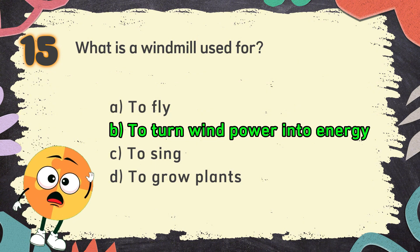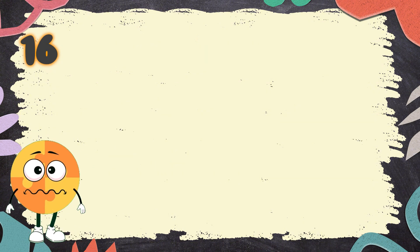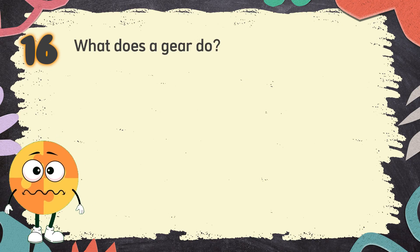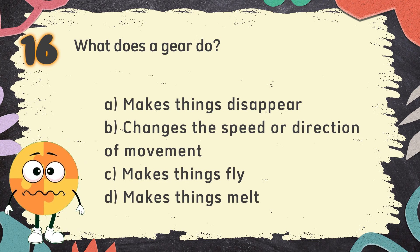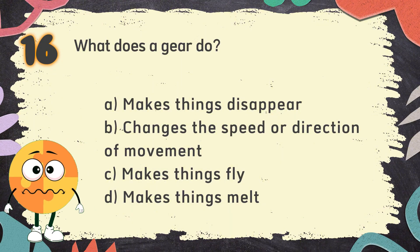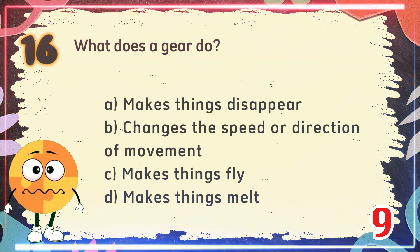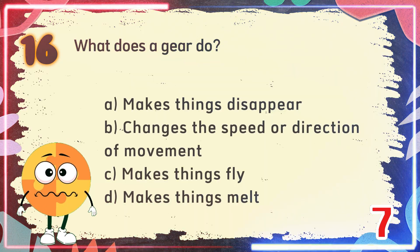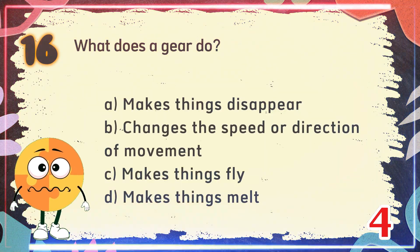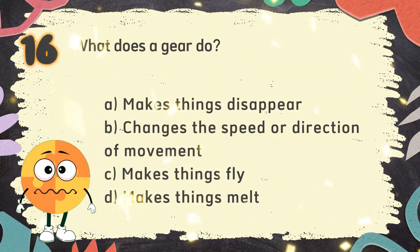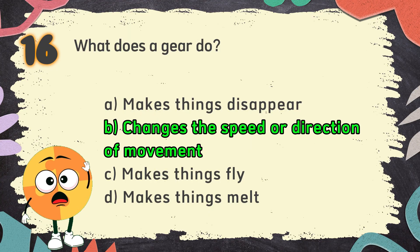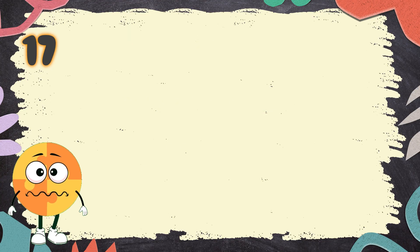Number 16. What does a gear do? The choices are: A. Makes things disappear. B. Changes the speed or direction of movement. C. Makes things fly. D. Makes things melt. The correct answer is B. Changes the speed or direction of movement.